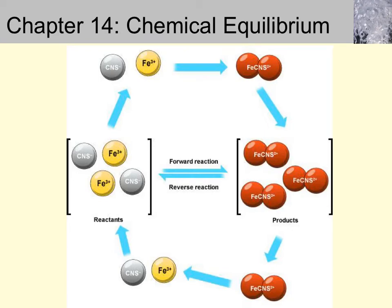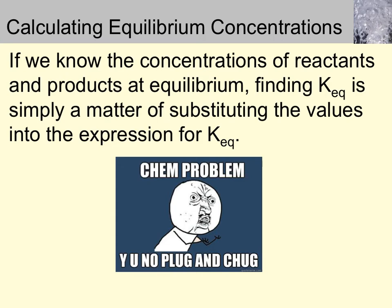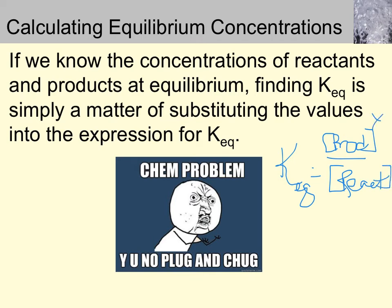This is the last lecture in Chapter 14, about calculating the equilibrium constant K when you don't know the equilibrium concentrations of all products and reactants. If you know those concentrations, it's just a matter of plugging and chugging. What happens if you don't know the equilibrium concentrations? There's something chemists call an ICE table. It involves some math, and it will often allow you to calculate K-eq.